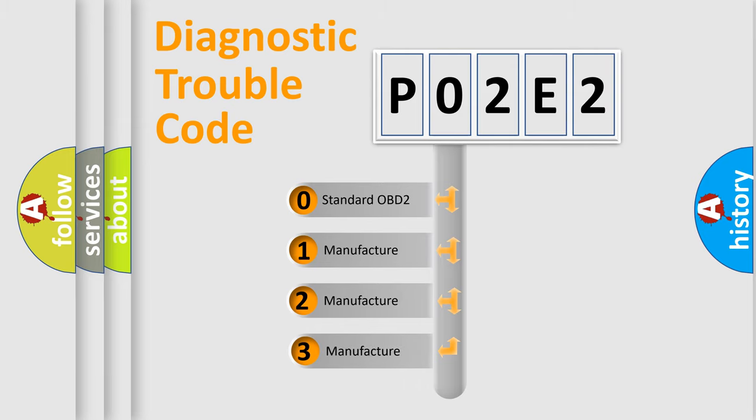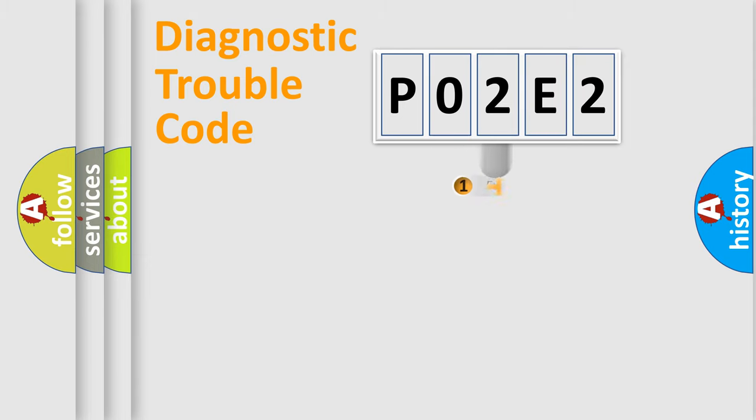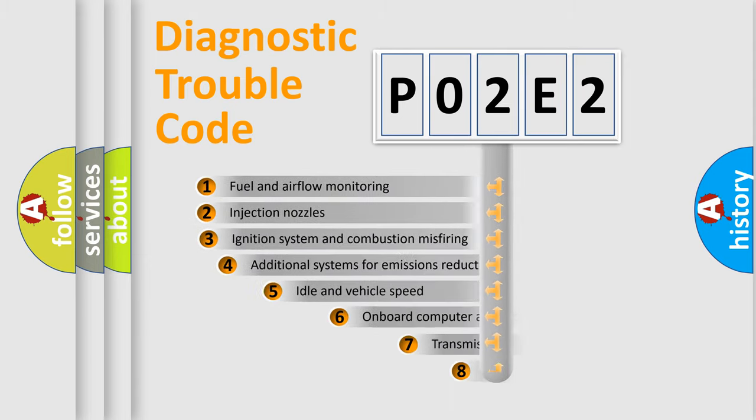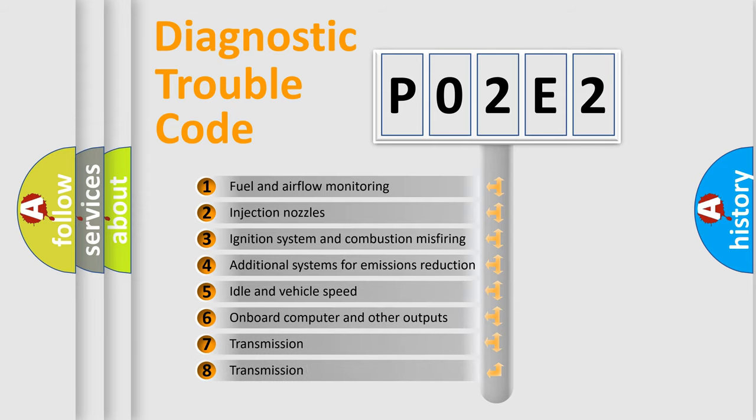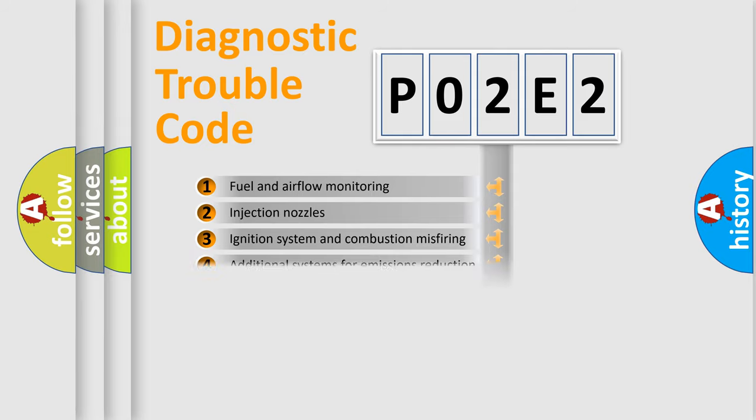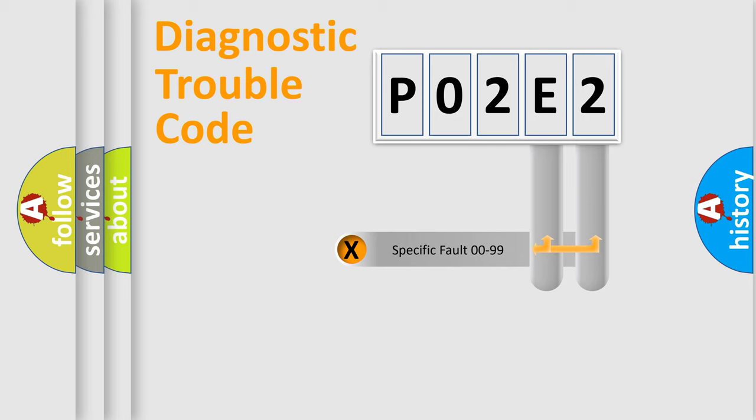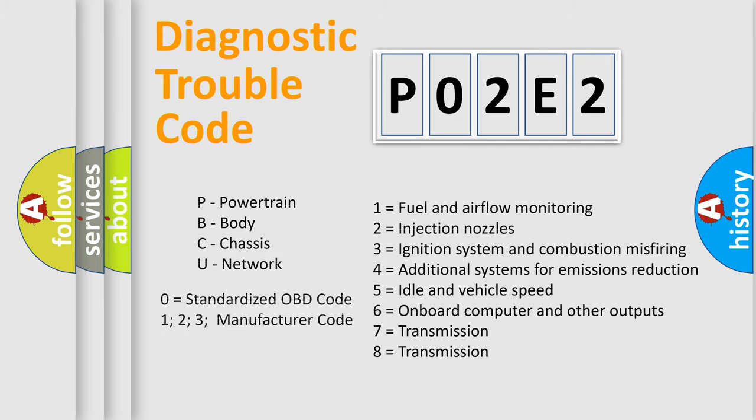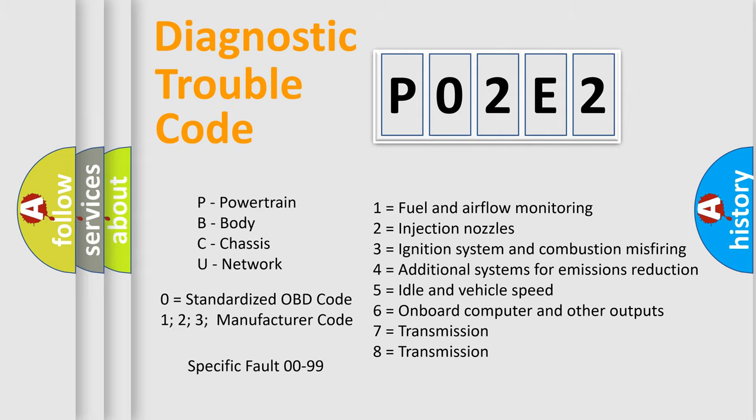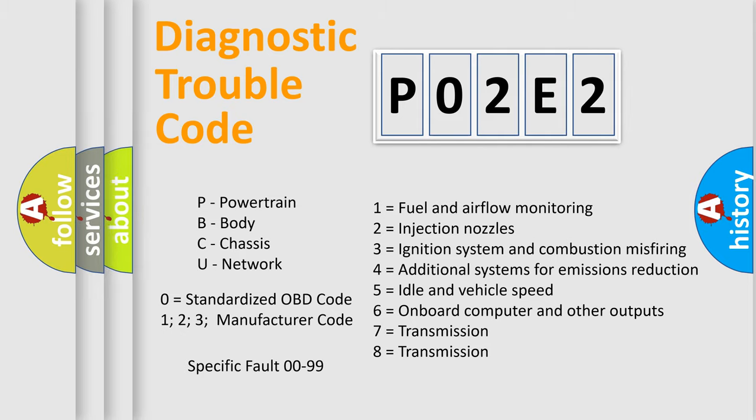If the second character is expressed as zero, it is a standardized error. In the case of numbers 1, 2, or 3, it is a manufacturer-specific error. The third character specifies a subset of errors. The distribution shown is valid only for the standardized DTC code. Only the last two characters define the specific fault of the group. Let's not forget that such a division is valid only if the second character code is expressed by the number zero.